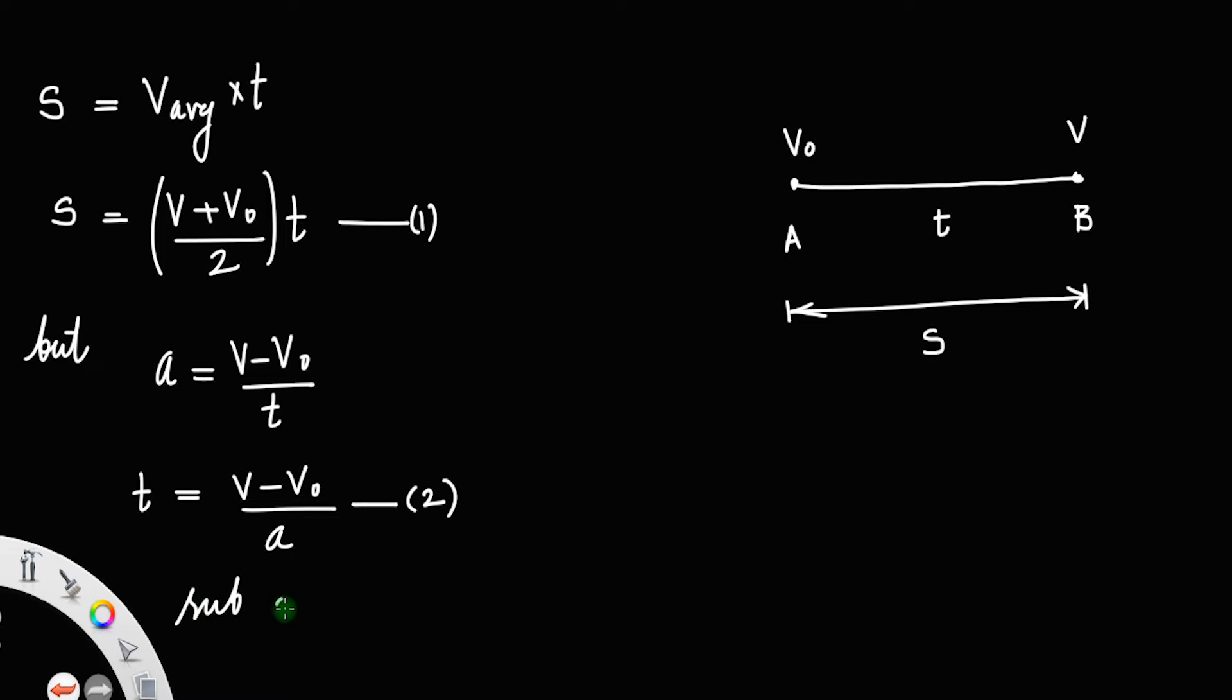Then substitute equation 2 into equation 1. You will get s equals (v + v₀)/2 times t. Instead of t, you can write (v - v₀)/a.